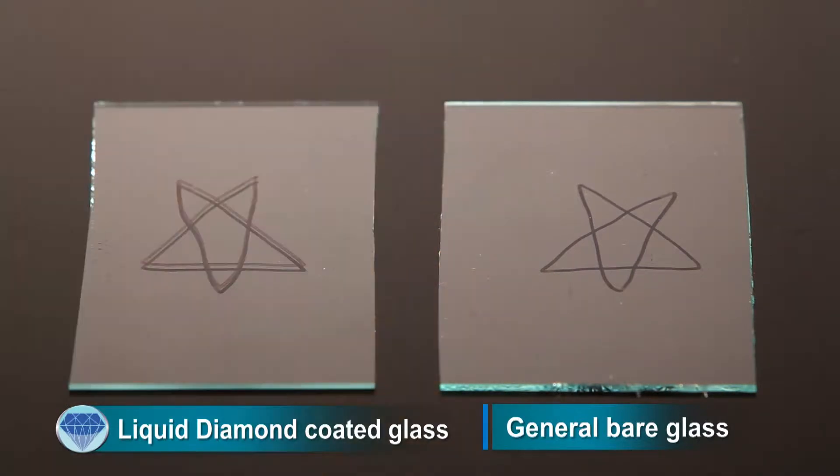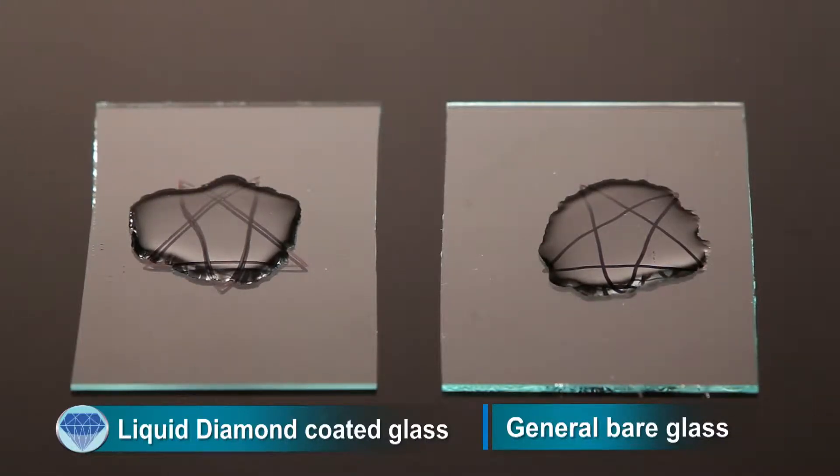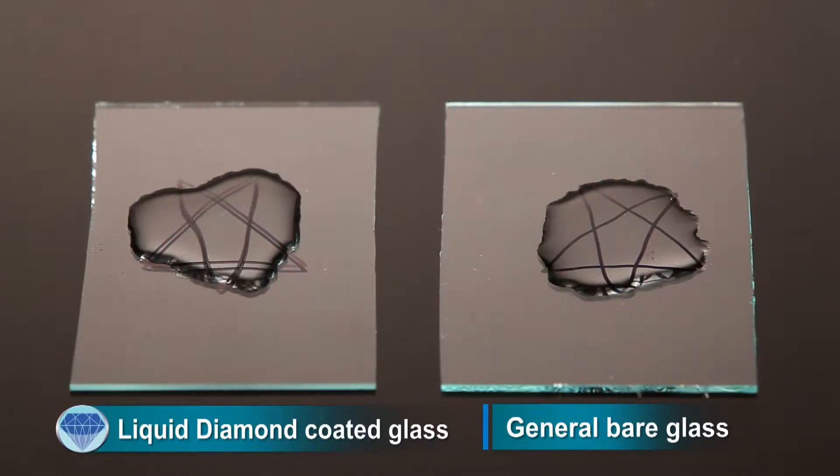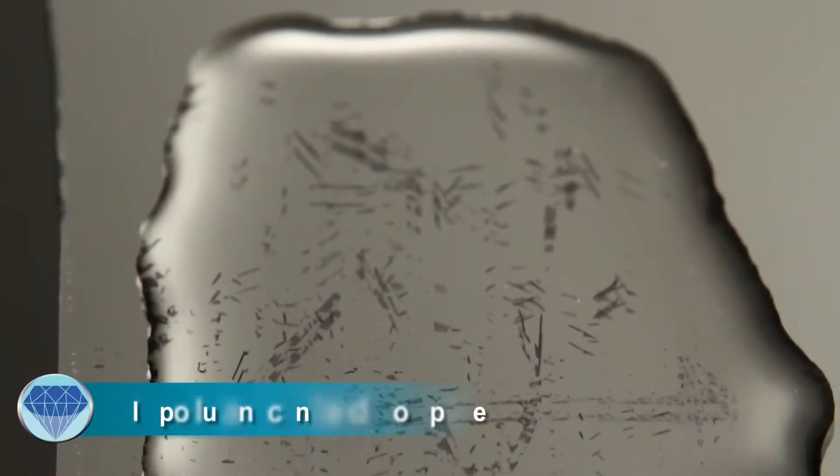Draw star pattern on each side of the glass plate with a marker. Drip some more water onto the star pattern on each side. We can see the star pattern on the Liquid Diamond coated left side floats up and disperses, but the right side remains the same.